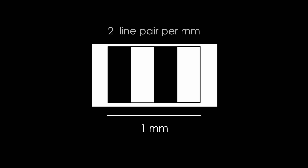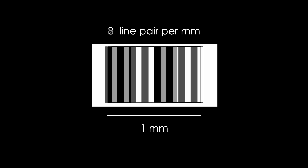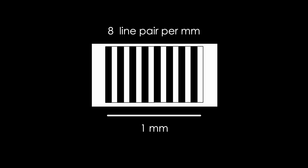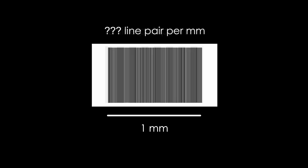Now, let's add another line pair. Can we still make them out? You bet we can. So this would be two line pairs per millimeter. What about eight line pairs per millimeter? Still good, right? So you can see that if we continue with this, there is going to be a point at which we can no longer differentiate the line pairs from one another. We do not have the resolution to do so.